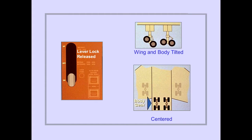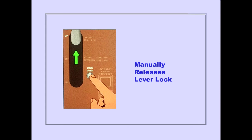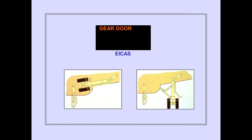The landing gear lever lock releases when the body and wing gear are tilted and the body gear are centered. If the lever lock fails to release, pushing the lock override manually releases the lever lock, and the gear lever can then be moved to up. The ICAS advisory message 'gear door' is displayed when any gear door is not closed and the gear is not in transit. When a gear door remains open, airspeed limitation is the same as the gear extended speed: 270 knots or 0.82 Mach.